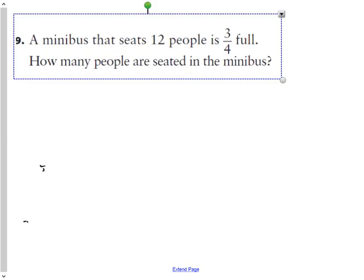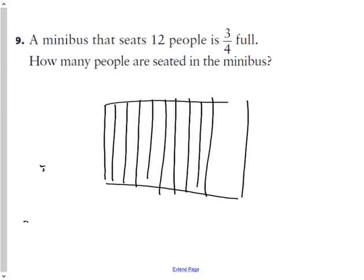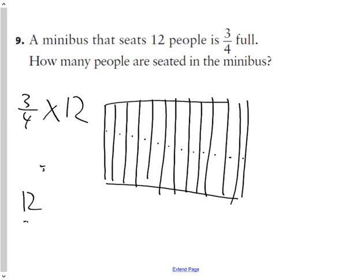The last question: a mini-bus seats 12 people; when full it's three-quarters full — how many people is that? There are 12 seats drawn. Three-quarters of 12: if I multiply three-quarters by 12, how many quarters would I have? Thirty-six quarters. Thirty-six over four as a whole number is nine. So three-quarters of 12 is nine — there are nine people on that bus.